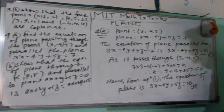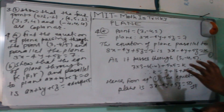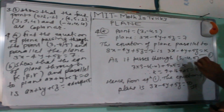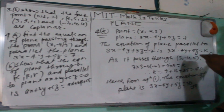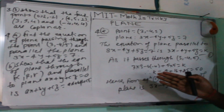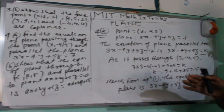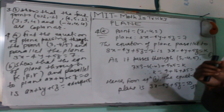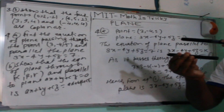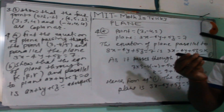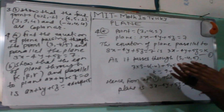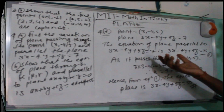This is simple: for parallel planes, only the constant changes while the coefficients of x, y, z remain the same — similar to parallel lines in 2D where only the constant differs. So we just replace the constant with K and find its value using the given point.